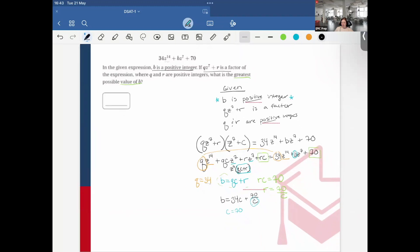So I can make c = 70. Then b = 34 × 70 + 70/70, which is 1. 34 × 70 is 2,380 plus 1. Therefore the largest possible value that b could be is 2,381. And that would be the correct answer.